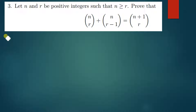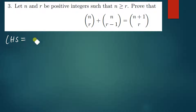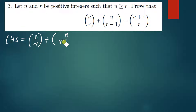So n choose r can also be written using that formula. Let me take the left hand side, which is n choose r plus n choose r minus one. Every time you are proving something that is equal to another thing, make sure that you get the complicated part and simplify it into a simpler version.